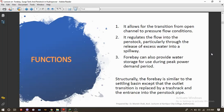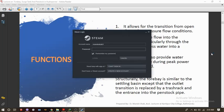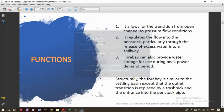The second function is it regulates the flow into the penstock particularly through the release of excess water into the spillway. The third function is forebay can also provide water storage for use during peak power demand period.